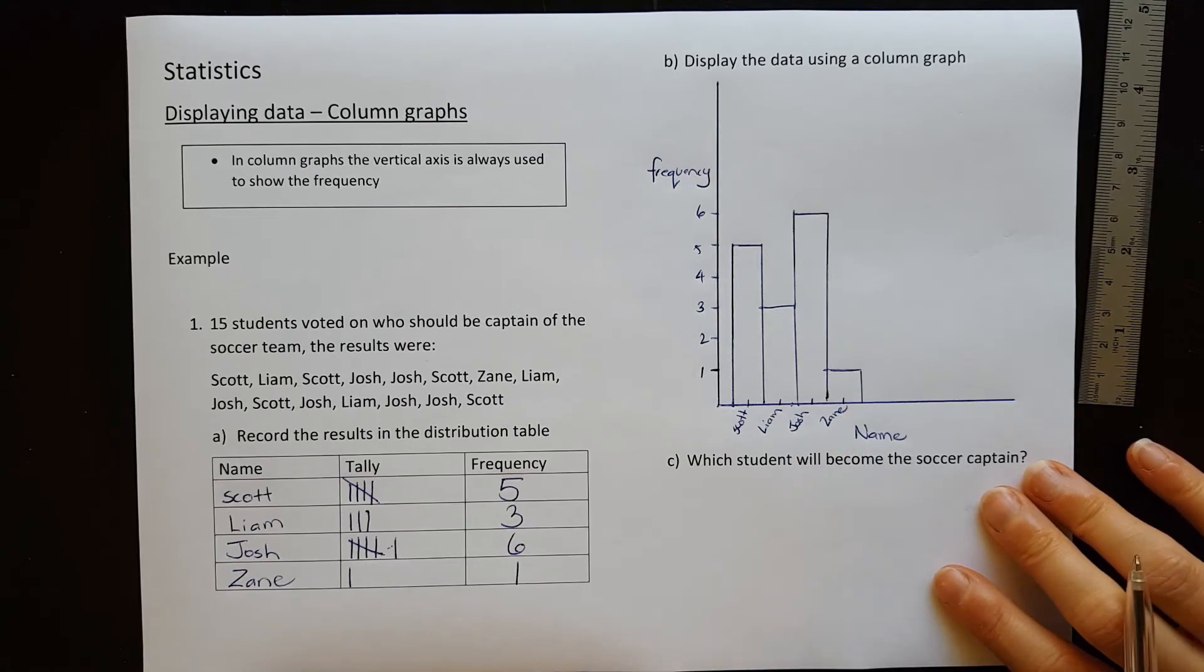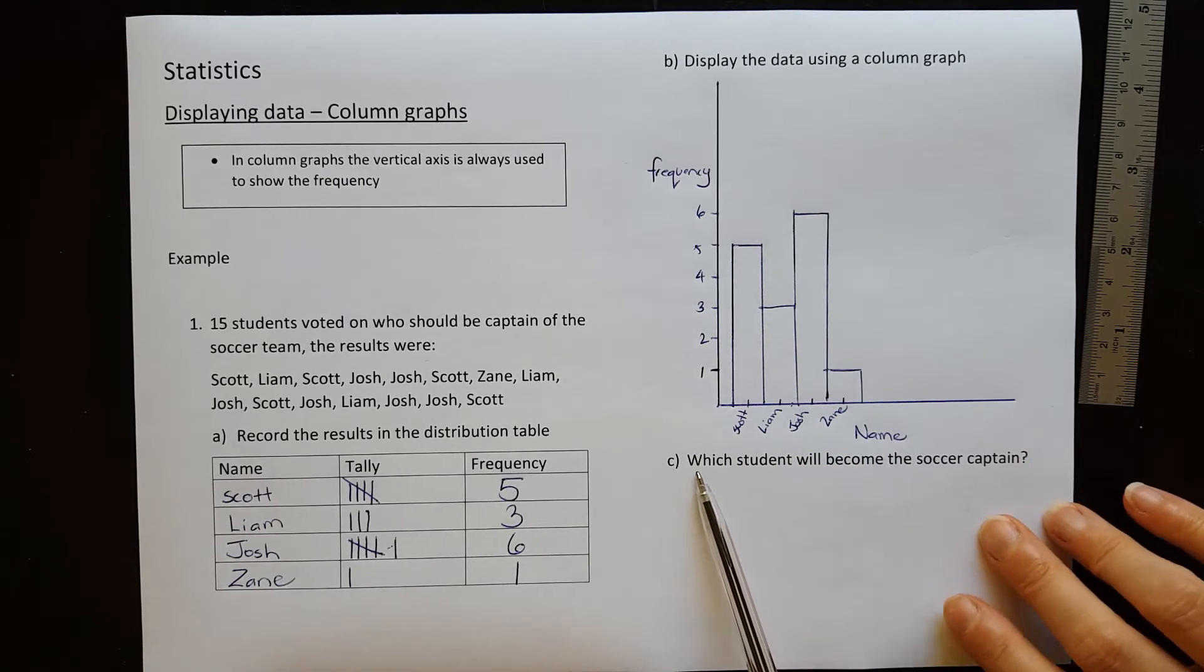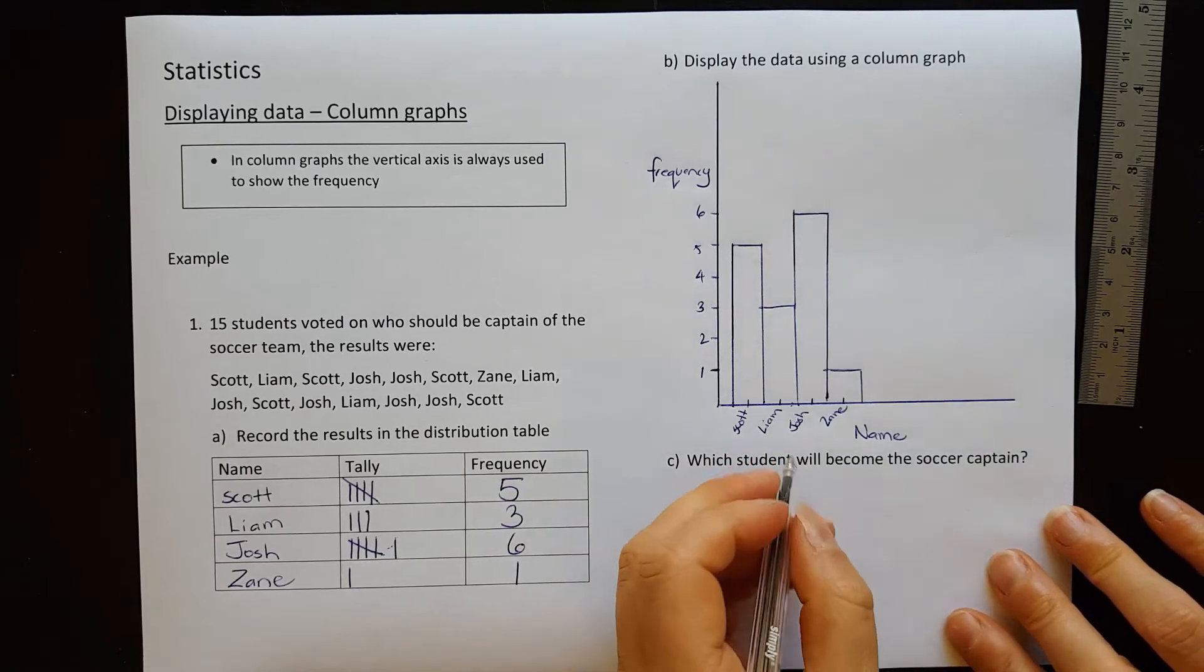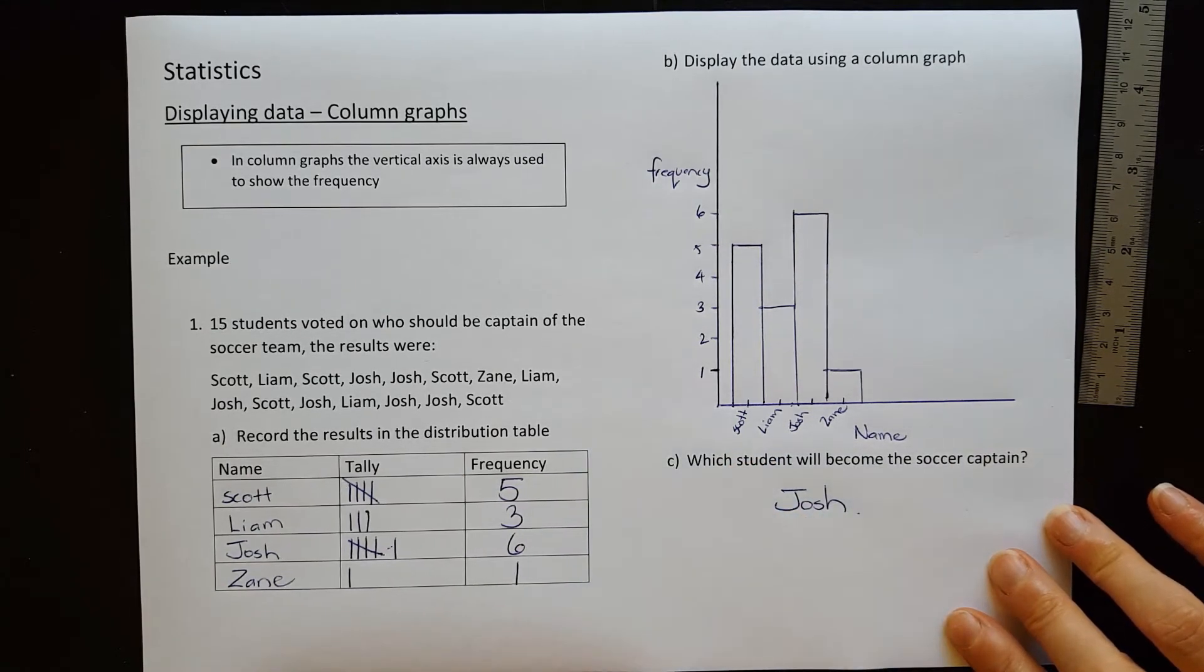So that is a column graph and you can see there that Josh has the highest column. So he would be the soccer captain. Which student will become a soccer captain? Josh. He got the most votes. So just one question because they take a little bit of time to draw up. Time for you to try this.